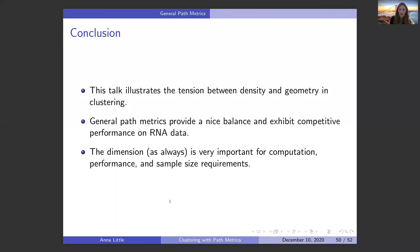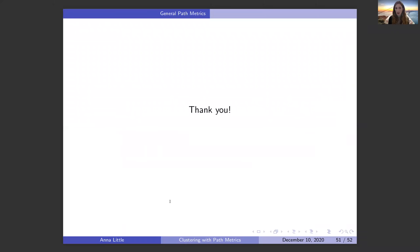To wrap up: this talk illustrates the tension between density and geometry in clustering. General path metrics provide a nice balance and exhibit competitive performance on RNA data. The dimension is always very important — for computation, performance, and sample size requirements. Thank you very much for your attention.